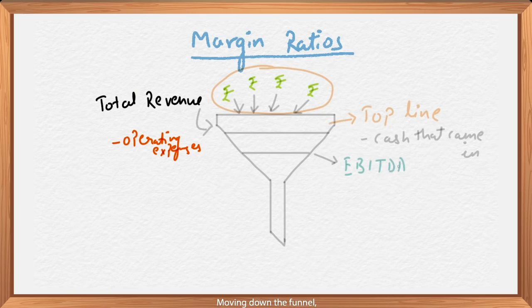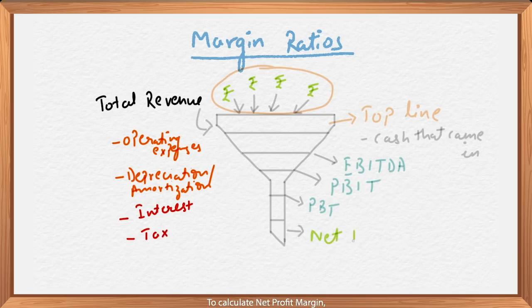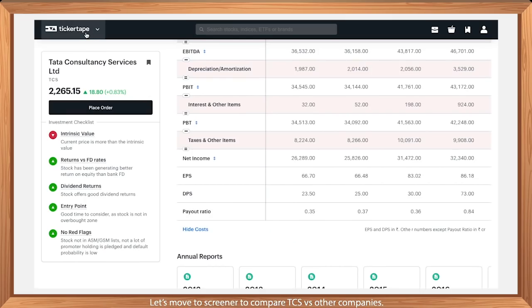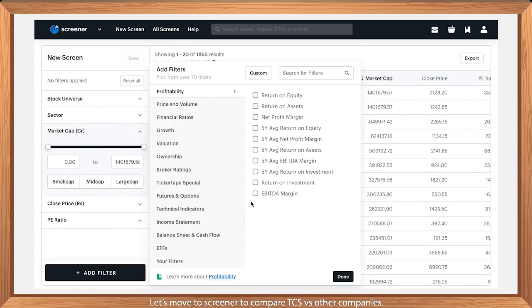Moving down the funnel, we subtract other items like interest and taxes to arrive at the net income, which is the final profit or loss number of the company. To calculate net profit margin, we divide net income by total revenue, which gives us 20.02%.